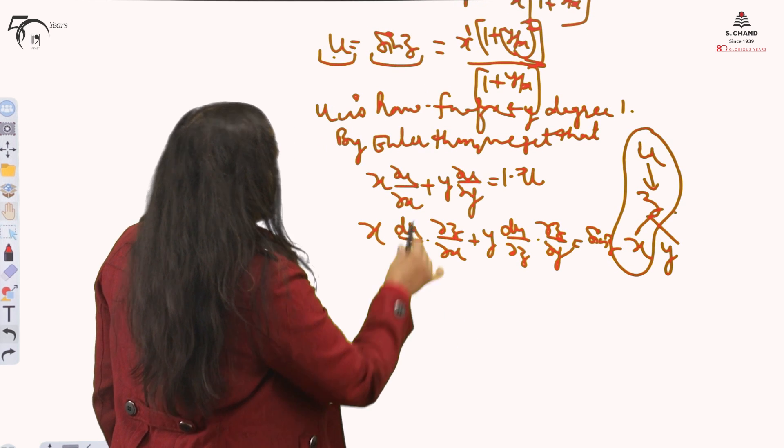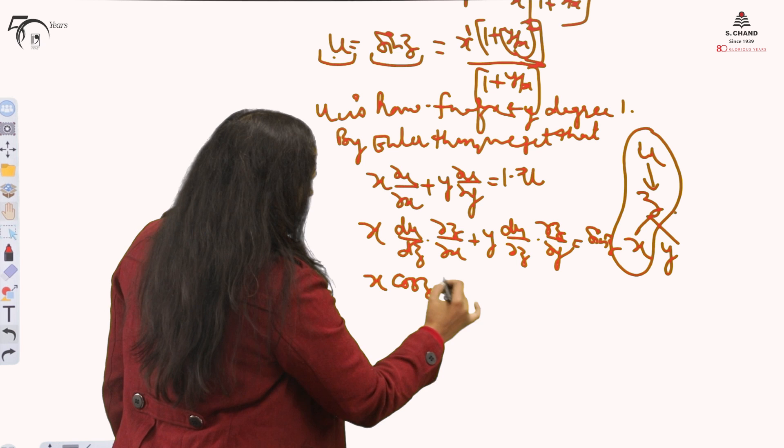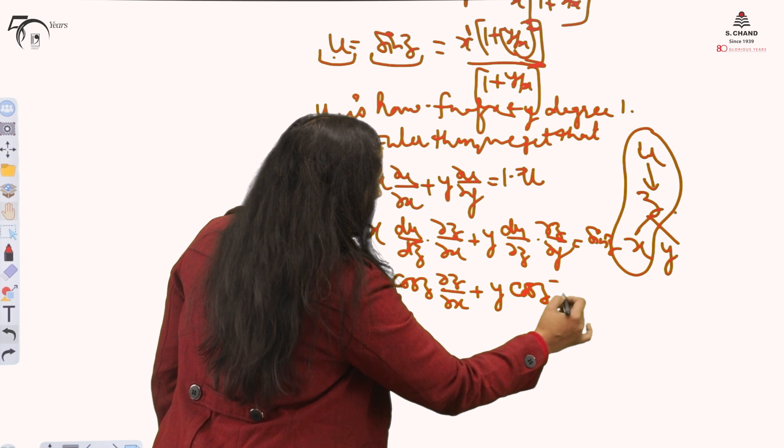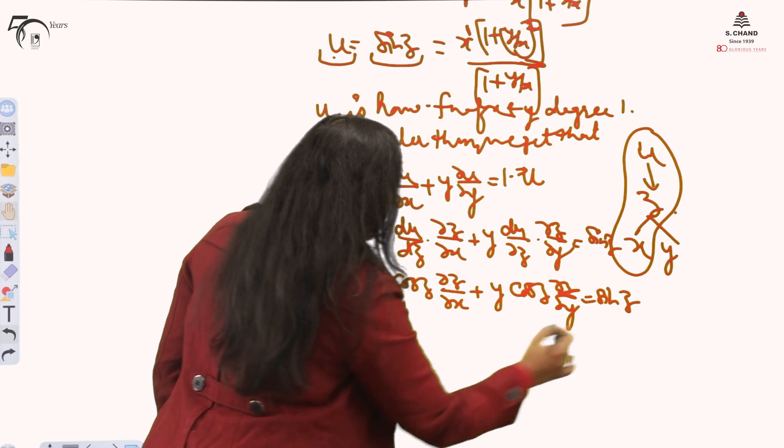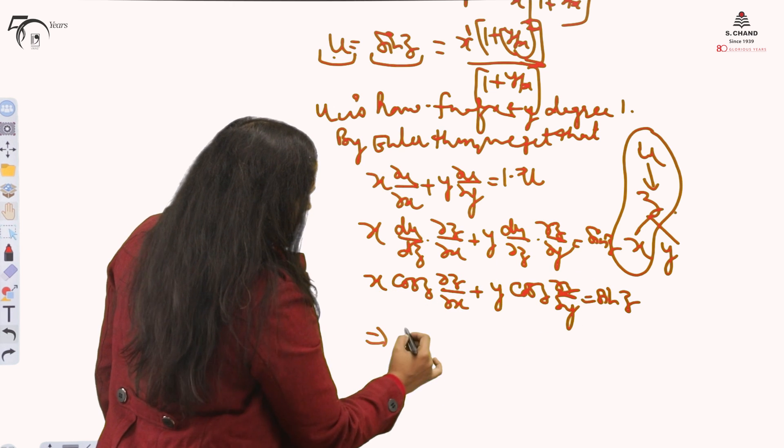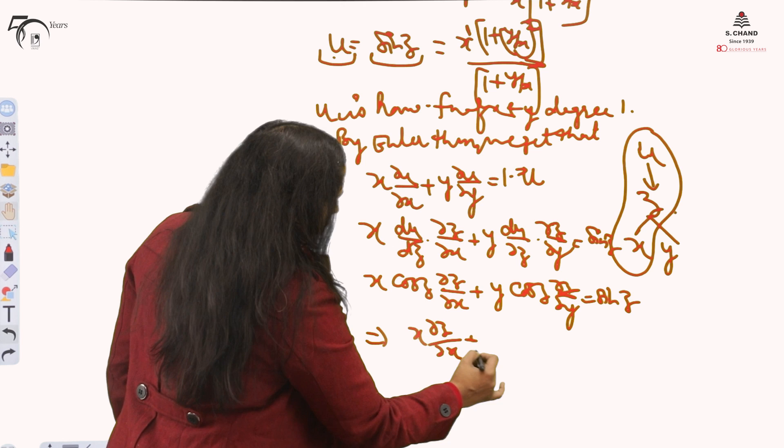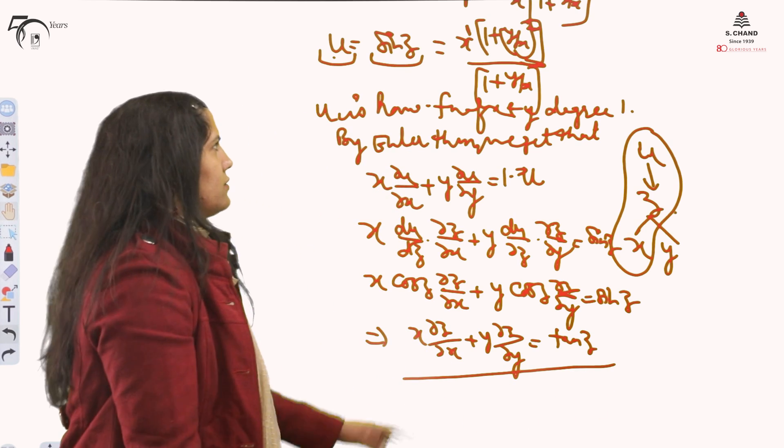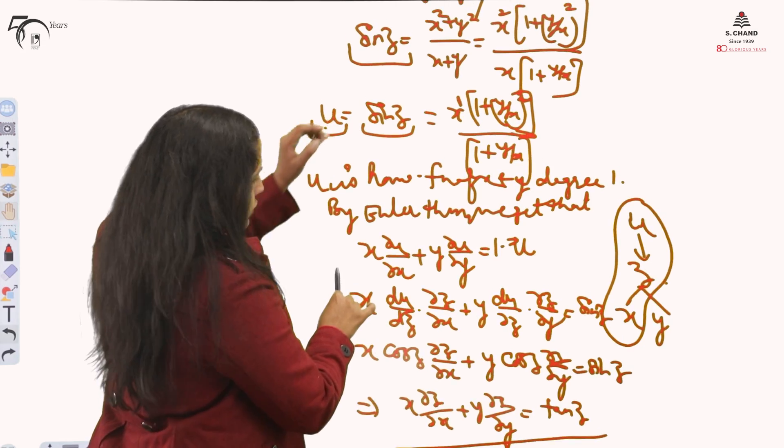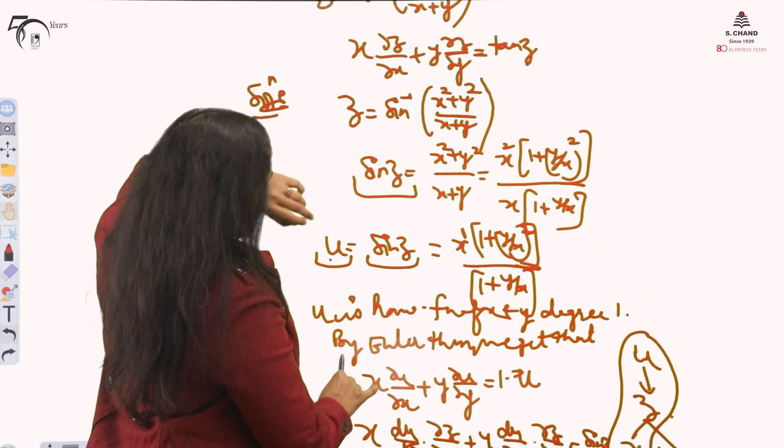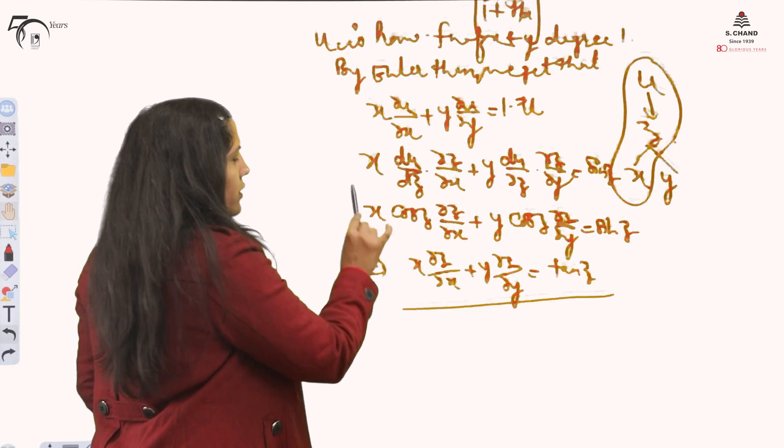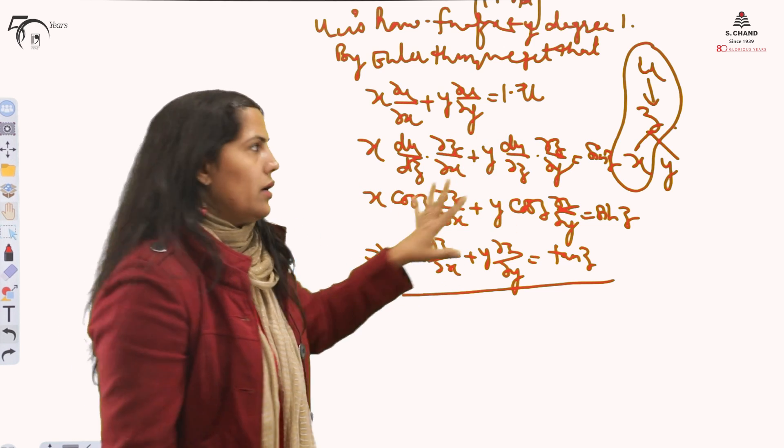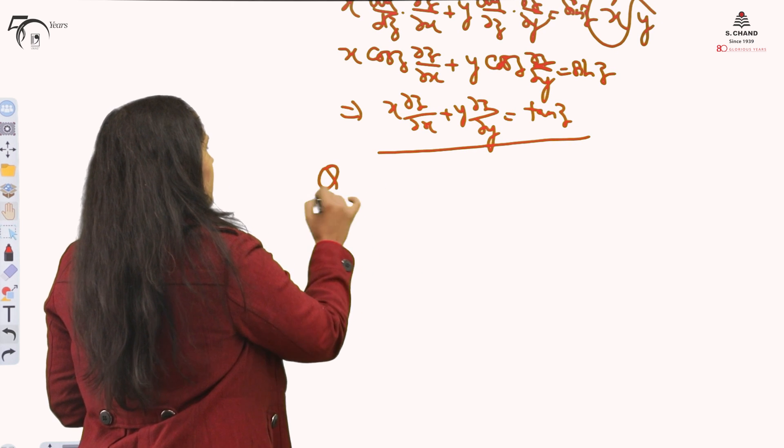du by dz is how much? The derivative of this total, it is cos z, del z by del x as it is. You will keep du by dz again cos z and del z by del y equal to sine z. cos z is common, take it to that side. So x del z by del x plus y del z by del y is tan z. We got the final answer. This we were supposed to prove, and we are done using Euler's theorem. Homogeneity is the main part.